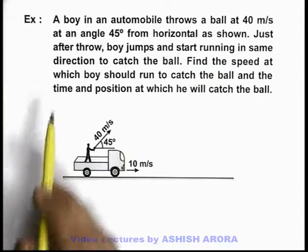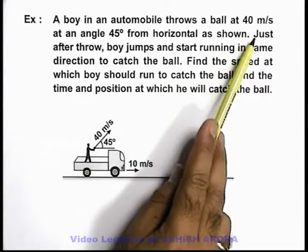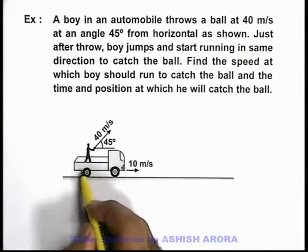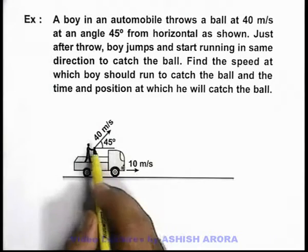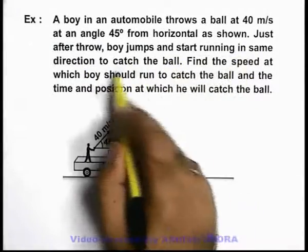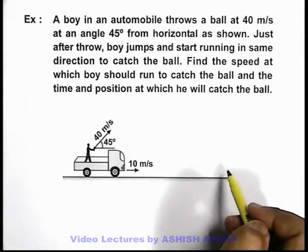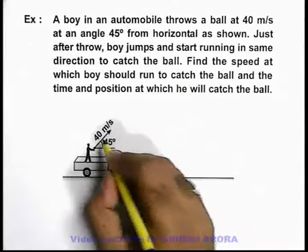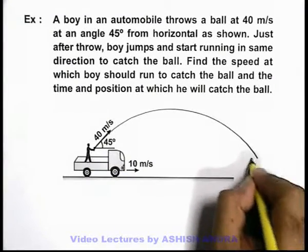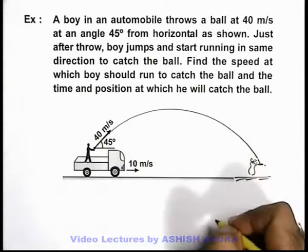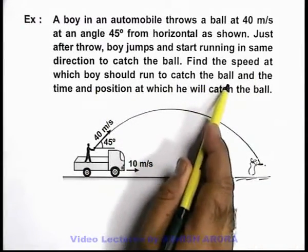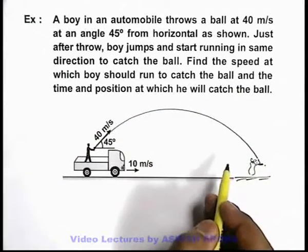Let us take an example where a boy in an automobile throws a ball at 40 meters per second at an angle 45 degrees from the horizontal. The automobile is moving with a velocity of 10 meters per second. Just after the throw, the boy jumps and starts running in the same direction to catch the ball. We are required to find the speed at which the boy should run to catch the ball, and also the time and position at which he will catch the ball.